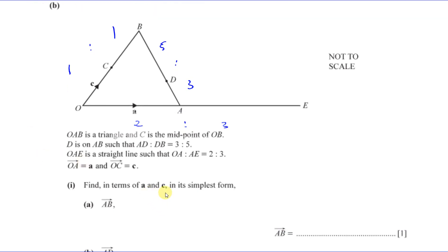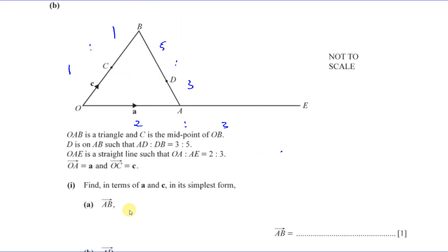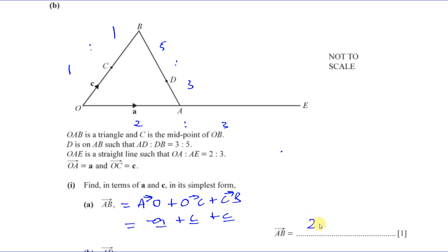Part 1 says find, in terms of A and C in its simplest form, the vector from A to B. The vector from A to B is minus A plus 2C. We can think of it as going from A to O, then O to C, then C to B. So A to O is minus A, O to C is C, and C to B is also C, giving 2C minus A, or minus A plus 2C — same thing.